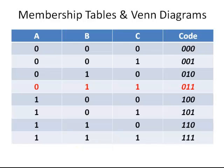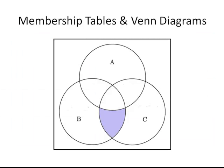Moving on we have the 0, 1, 1 region. This is the first of the intersection regions. It is not part of A but it is part of B and part of C. So it is part of the intersection between B and C that is outside A, represented by that shaded region there.